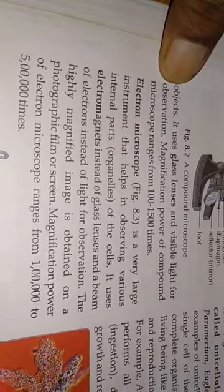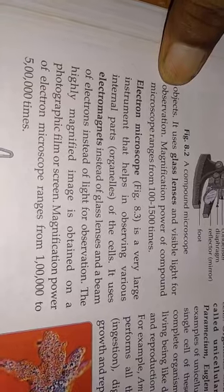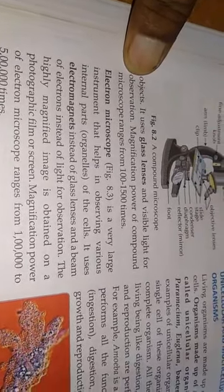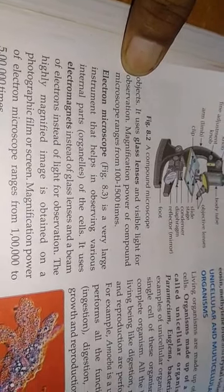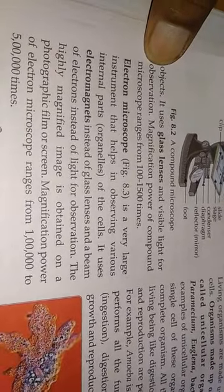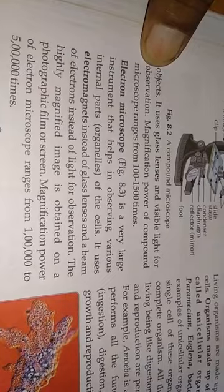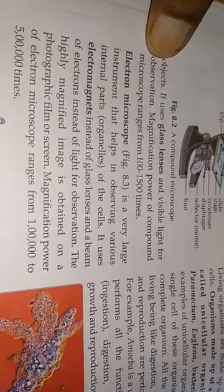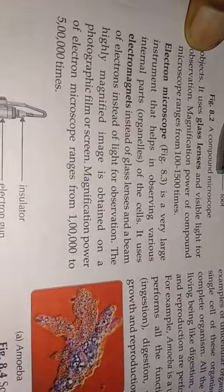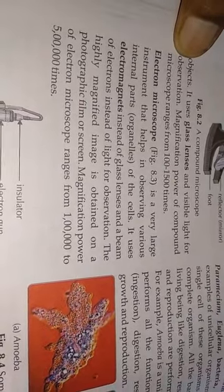The electron microscope is a very large instrument that helps in observing various internal parts of the cell. With a compound microscope we could see a cell nucleus, but the electron microscope reveals even finer structures. It uses electromagnets instead of glass lenses, and uses a beam of electrons instead of light for observation. The highly magnified image is obtained on a photographic film or screen.